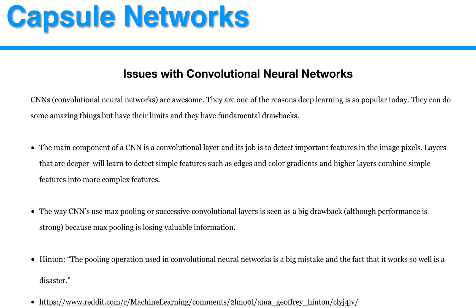The main component of a CNN is a convolutional layer, and its job is to detect important features in the image pixels. Layers that are deeper will learn to detect simple features such as edges and color gradients, and higher layers can bind those simple features into more complex features. The way CNNs use max pooling or successive convolutional layers is actually seen as a big drawback, although the performance is strong, because max pooling is losing valuable information.